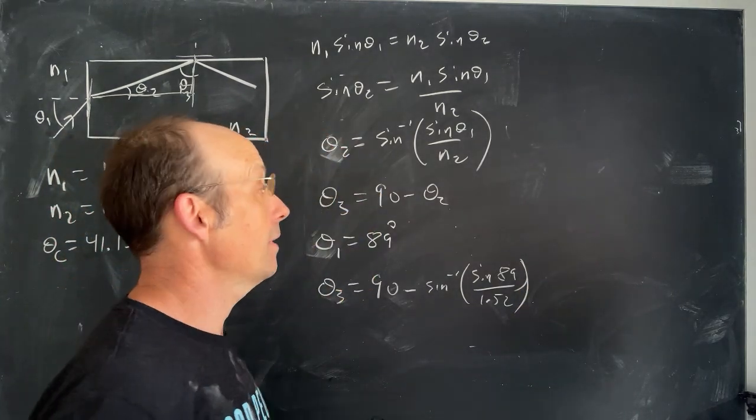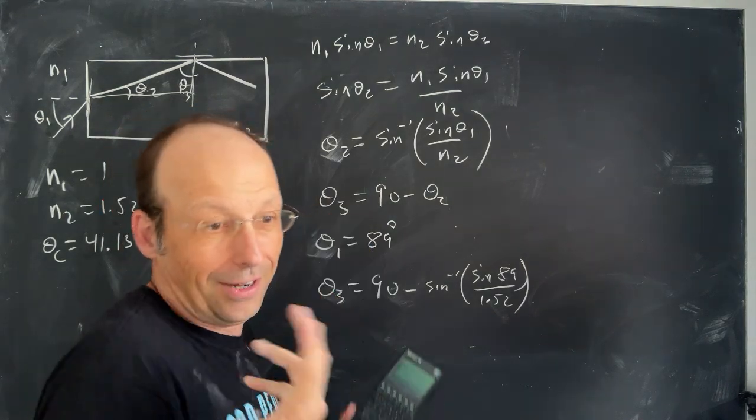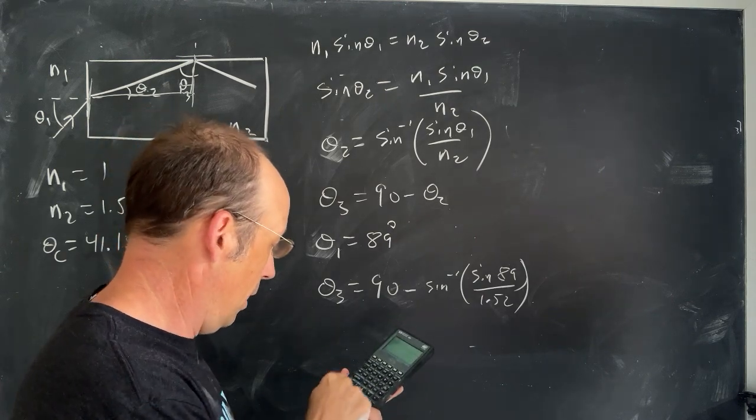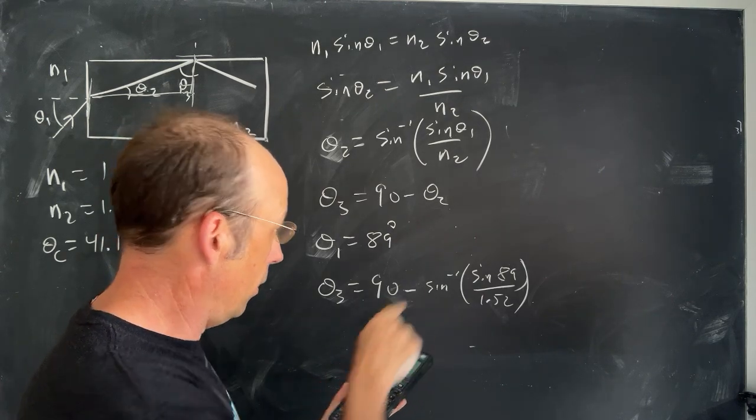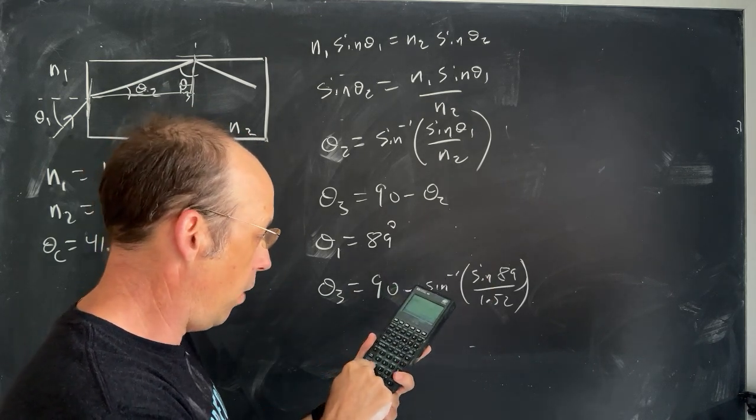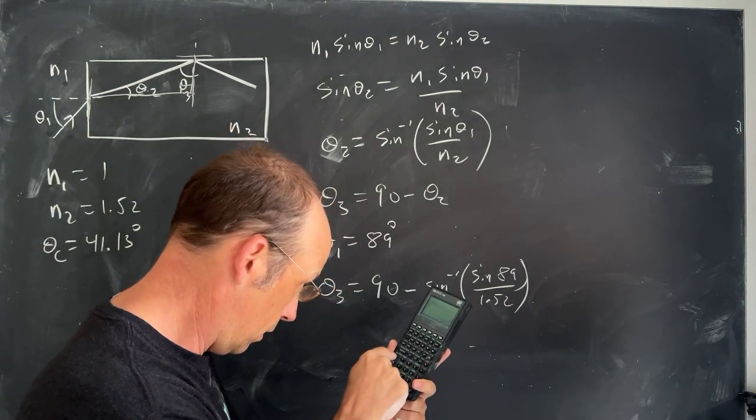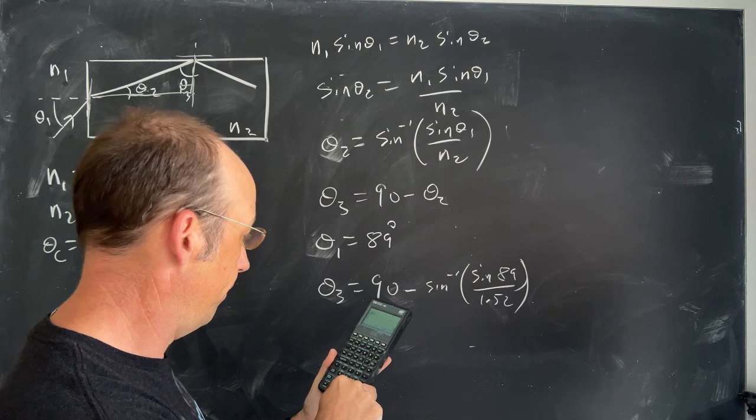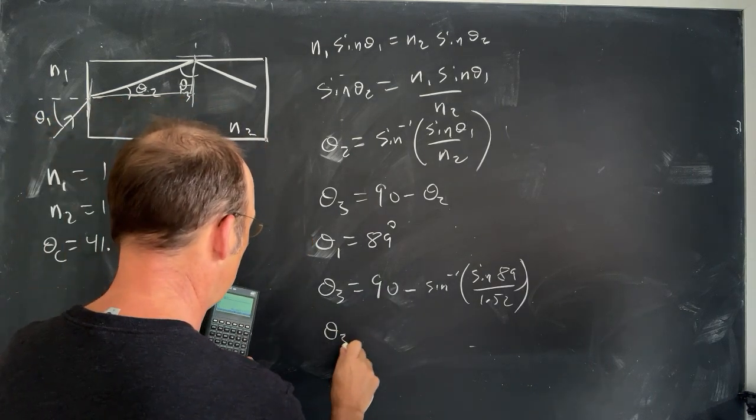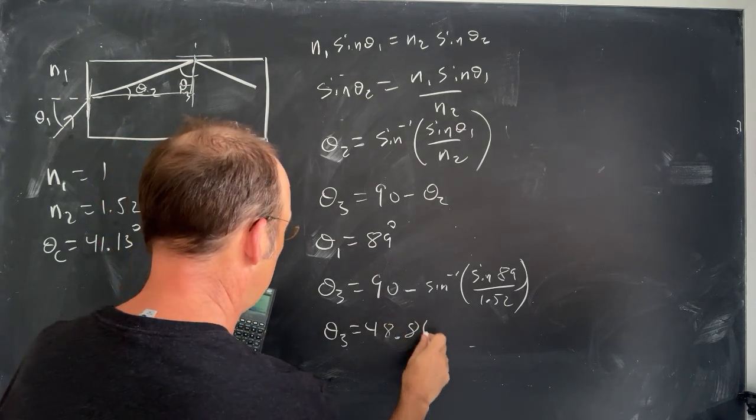If this video goes super terribly wrong, you'll never see it. So I'm not afraid. I'll just delete it. Right? I can do that. Which you shouldn't do on a test. You can't delete your test problem. But 90, enter. Now I'm going to do this. 89 sine. And I'm going to divide that by 1.52 divided by. I'm going to take the inverse sine. And then I'm going to subtract that.